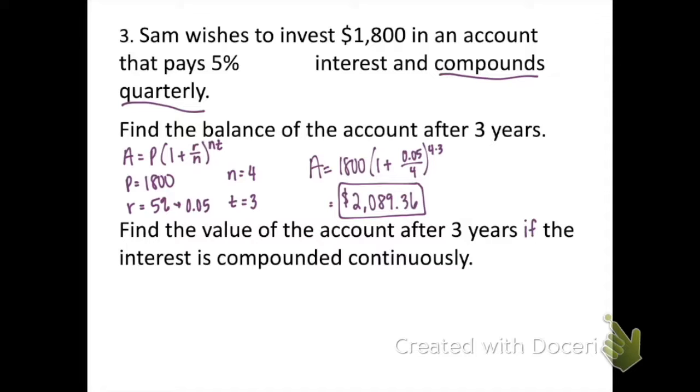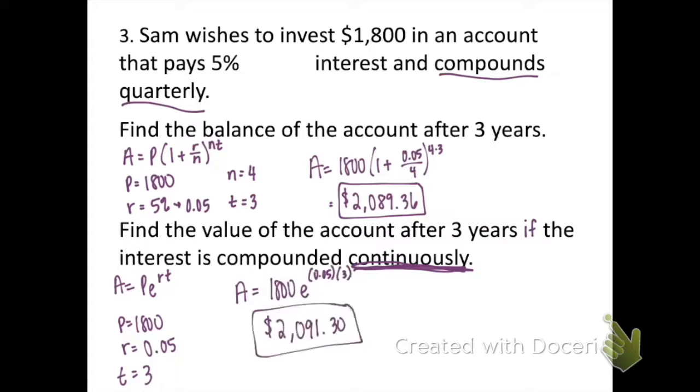Next, we're going to find the value of the account after three years if the account is compounded continuously. This is a really important word for you to look for. Anytime the problem says continuously, we know that we're going to use PERT. So our principal is still 1800, rate is still 5%, and time is three years. E is just a number, so we're not plugging anything in for E, we're just going to use the E button on our calculator. So plug everything into the equation, plug it into your calculator, and we get $2,091.30.